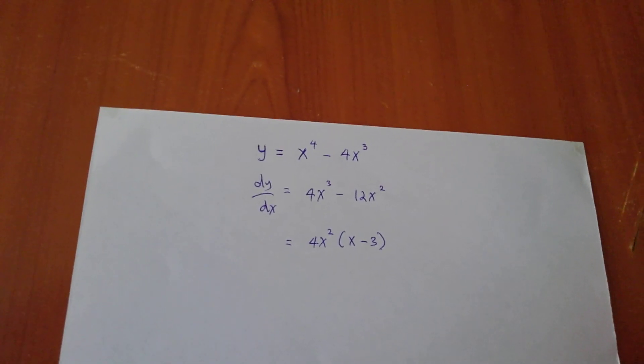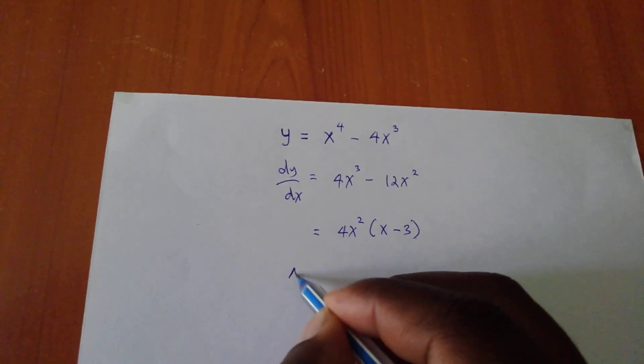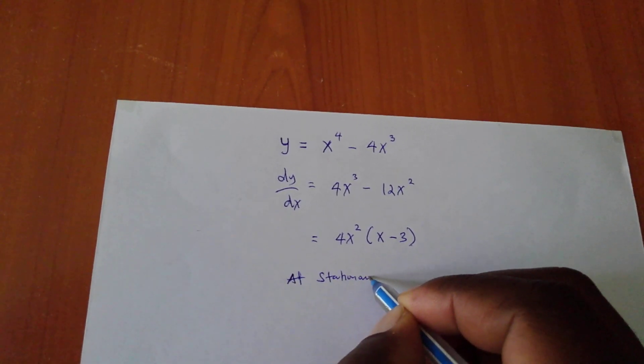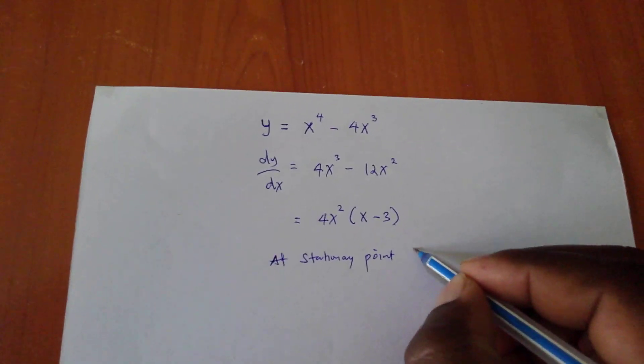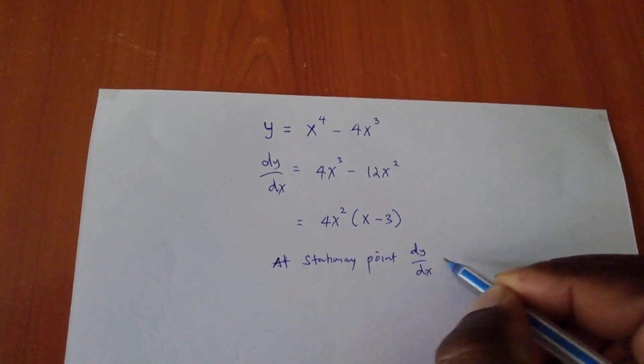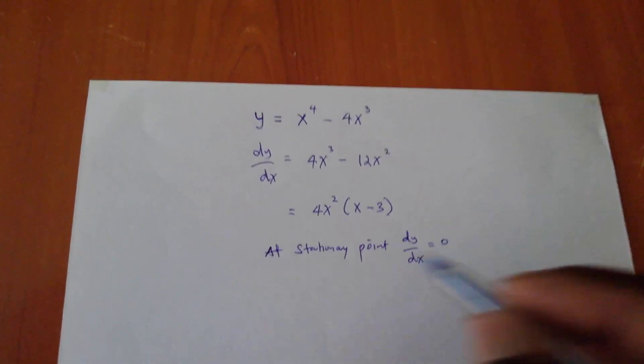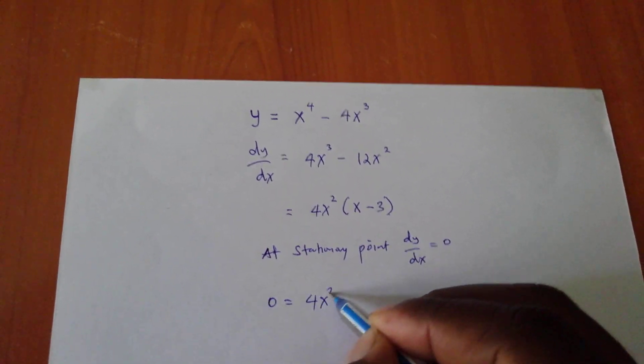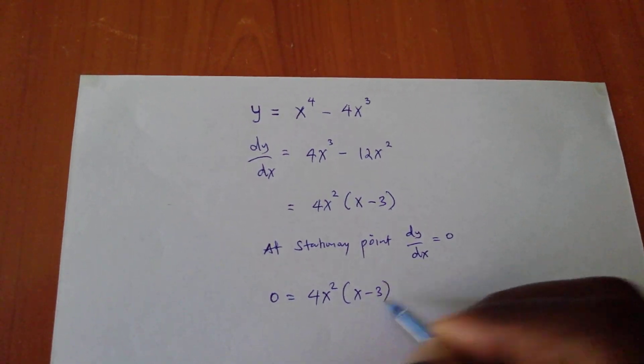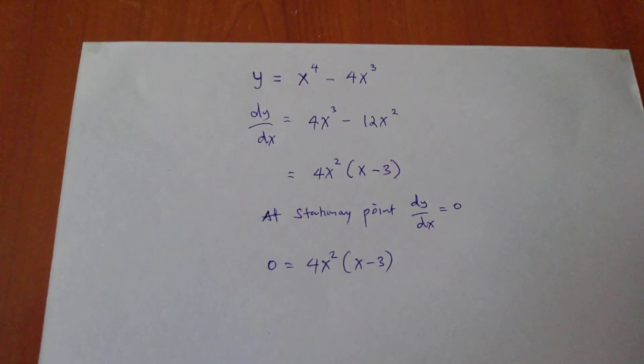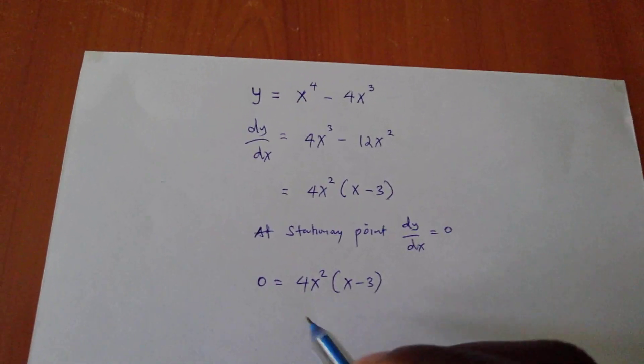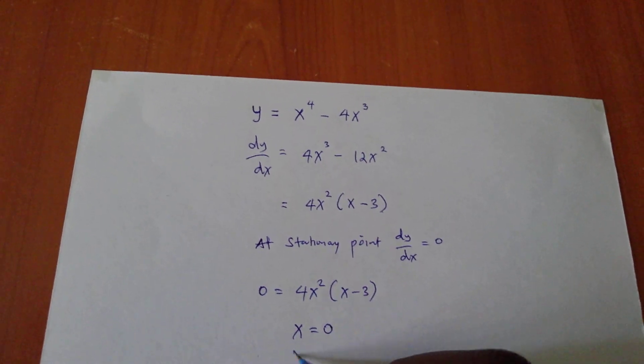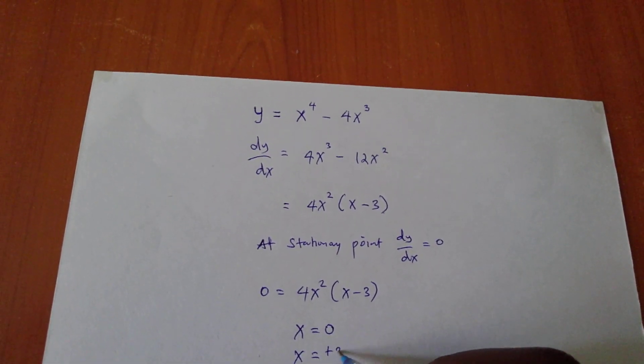I hope you agree up to this level. Now, at the stationary point, dy/dx equals to 0. So, I have to equate 0, of which I don't want to go into further details. In here, we shall get x = 0 and x = 3.